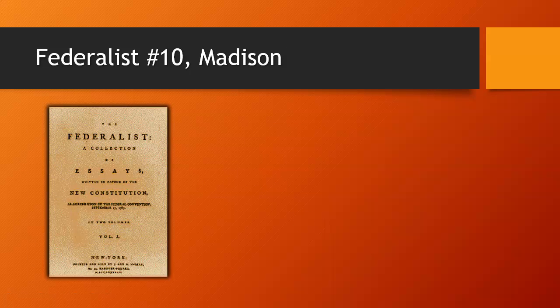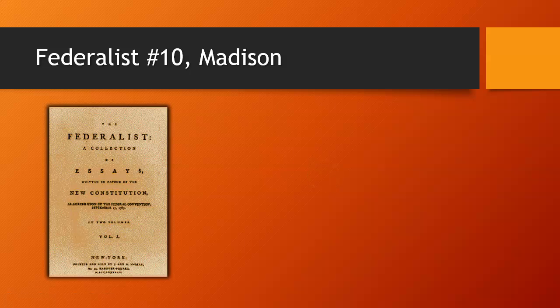To counter the anti-federalist arguments, a group of essays were published. You have an assignment this week to do a social media campaign pushing in favor of the Constitution. Of course, they didn't have social media in 1787, so what they did was put together a series of essays and published them in newspapers around the country, especially in New York, which was a key state — they didn't know if New York was going to ratify the Constitution. They figured if New York ratified it, other states would follow. These essays were actually written by James Madison, Alexander Hamilton, and John Jay — the Federalist Papers — even though they published them under pseudonyms, fake names.